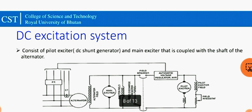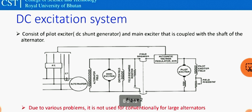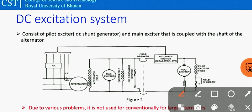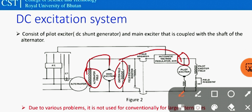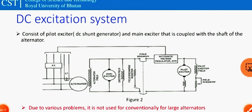Firstly, the DC excitation system. It consists of a pilot exciter, which is the DC generator, a main exciter, and the alternator. The shaft of the pilot exciter and main exciter is coupled to the alternator shaft. The output from the pilot exciter is given to the field winding of the main exciter, and the DC output from the main exciter is given to the field winding of the alternator through brushes and slip rings. Due to various problems, it is not used conveniently for large alternators.